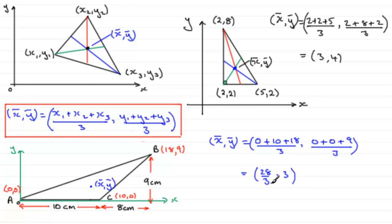X bar, y bar, then. 28 over 3, 3. So I hope that gives you some idea, then, how you can go about finding the centre of mass for a triangular uniform lamina. Okay.